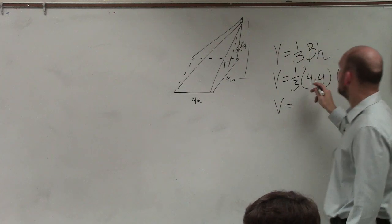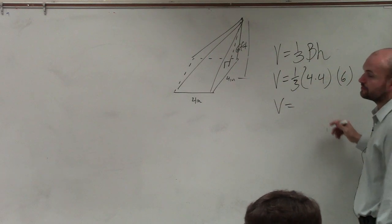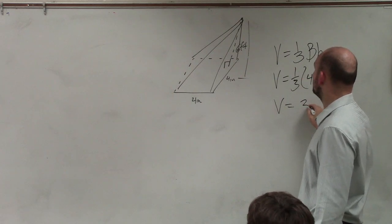So volume equals 3 times one-third is 2, 2 times 16 is going to be 32.